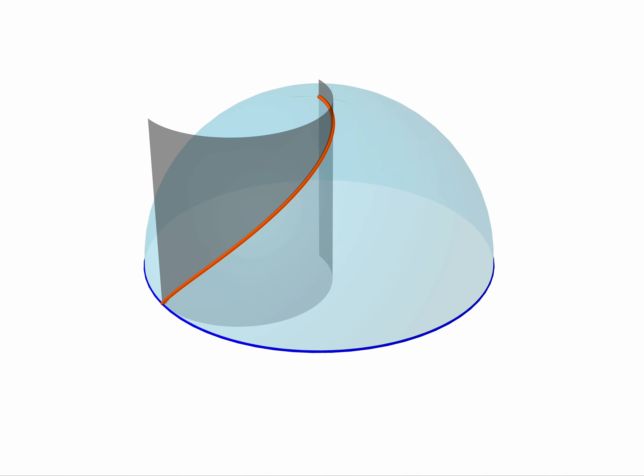Hello, this is just a short GeoGebra screencast of a demonstration of the properties of the intersection of two surfaces, this being a hemisphere and half of a cylinder.